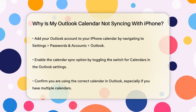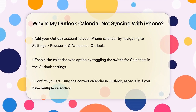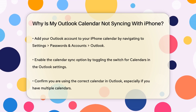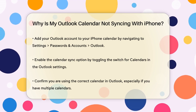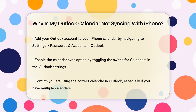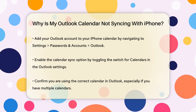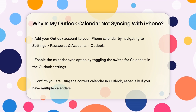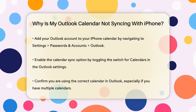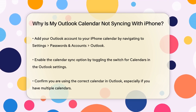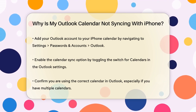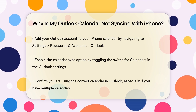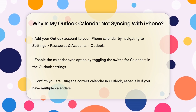If you have multiple calendars in Outlook, make sure you're using the correct one. Sometimes events might be saved to a different calendar, which can cause syncing issues. Check your Outlook settings to set the default calendar to the one you're using.